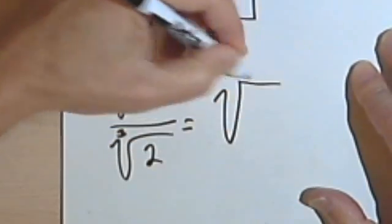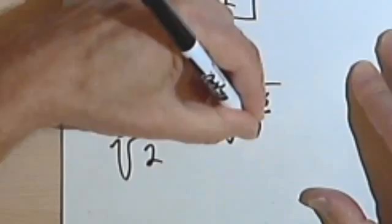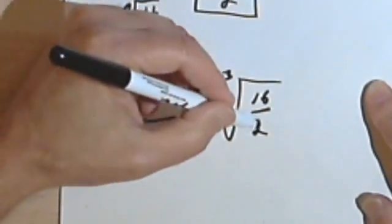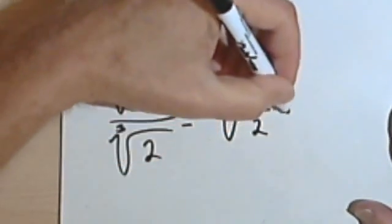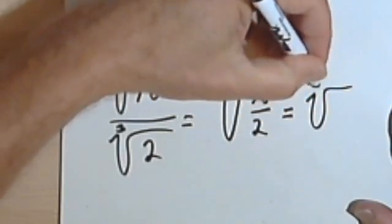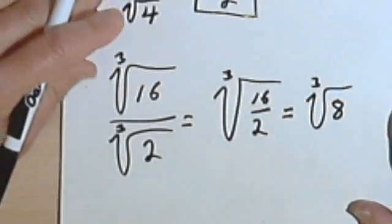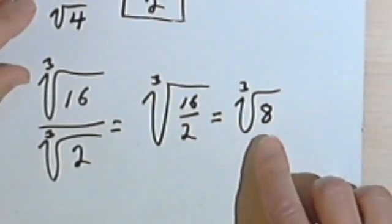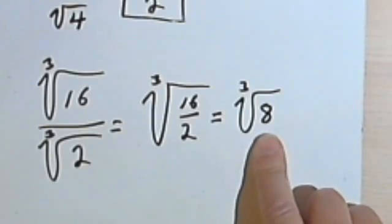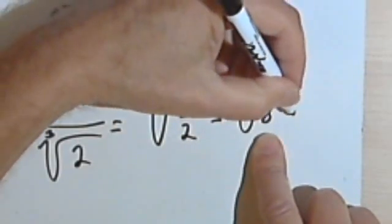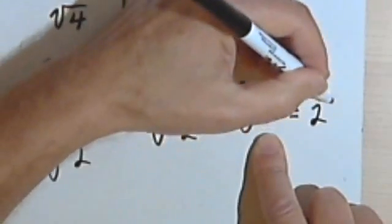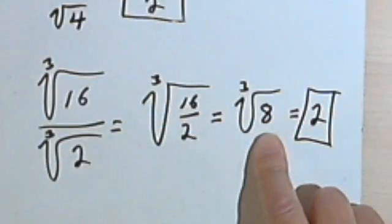So let's do this in two steps. I've got the third root of 16 over 2. 2 into 16 is 8. So I've got the third root of 8. And because you've memorized your list of perfect cubes, you know that 8 is a perfect cube, and this whole thing just becomes 2.